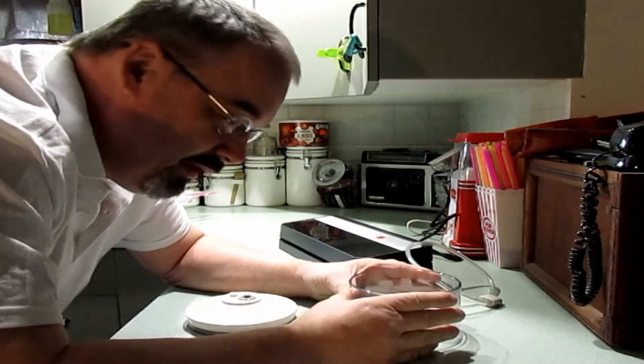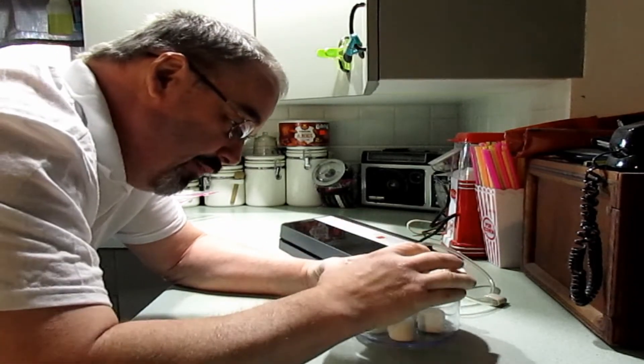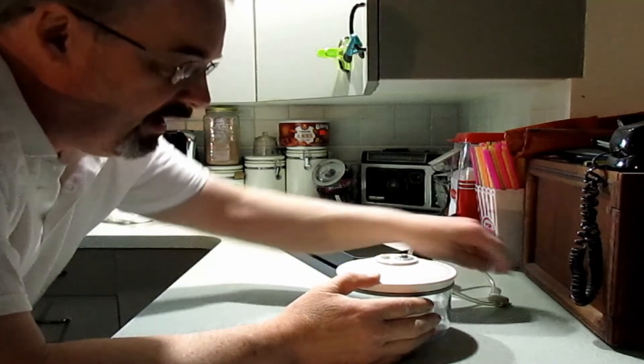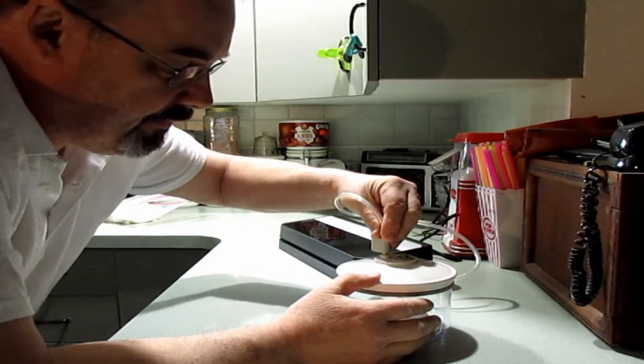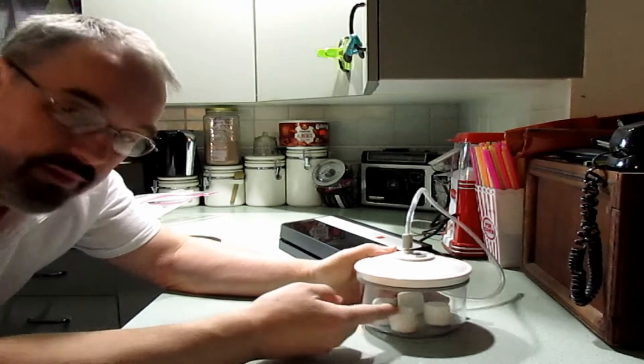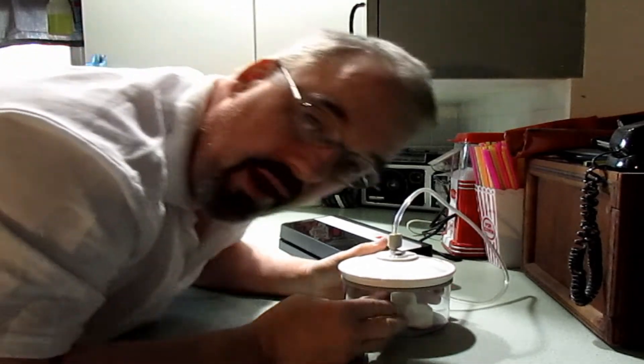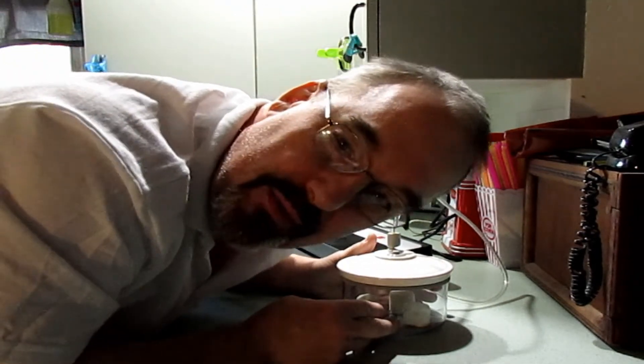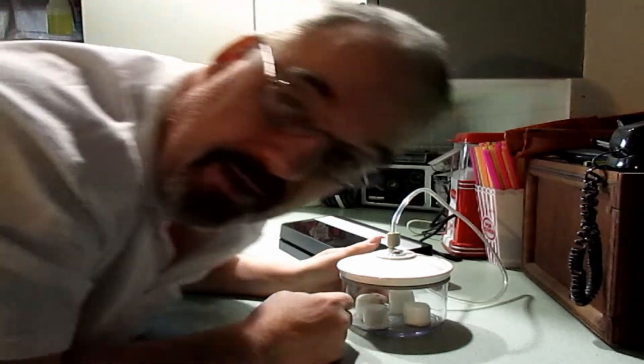We have our special canister here that we're gonna put our lid on. It's gonna seal it and we're gonna actually attach right to it and we're gonna vacuum these marshmallows and find out what happens to a marshmallow when it's under vacuum. Hang on, let's find out.